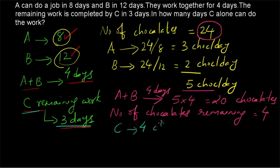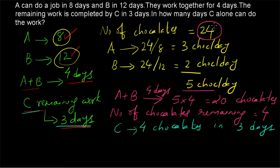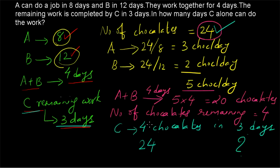C is completing 4 chocolates in 3 days. How much time will C take to finish the 24 chocolates alone? If C takes 3 days to complete 4 chocolates, then 4 chocolates in 3 days means 24 chocolates — since 4 times 6 is 24 — we multiply 3 by 6 as well. So our answer will be 18 days.